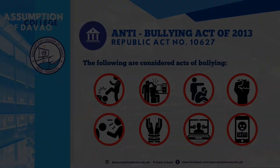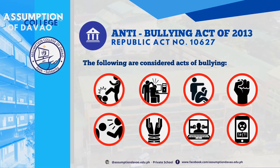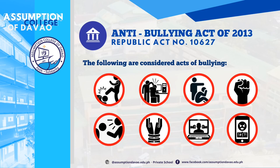The following are considered acts of bullying: any unwanted physical contact between the victim and the bully, such as pushing, shoving, punching, tickling, headlocks, slapping, teasing, fighting, inflicting school pranks, and the use of available objects or weapons.